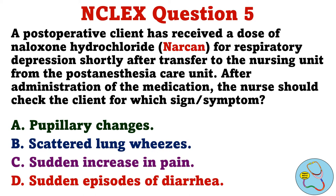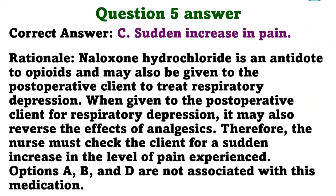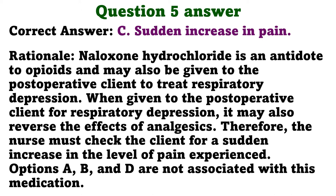Question 5. A postoperative client has received a dose of naloxone hydrochloride for respiratory depression shortly after transfer to the nursing unit from the post-anesthesia care unit. After administration of the medication, the nurse should check the client for which sign/symptom. The correct answer is C. Sudden increase in pain. Rationale. Naloxone hydrochloride is an antidote to opioids and may also be given to the postoperative client to treat respiratory depression. When given for respiratory depression, it may also reverse the effects of analgesics. Therefore, the nurse must check the client for a sudden increase in the level of pain experienced. Options A, B, and D are not associated with this medication.